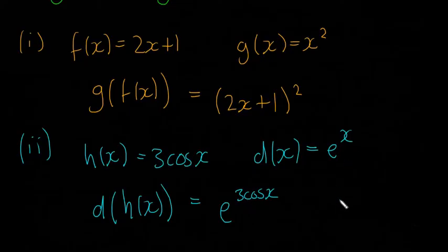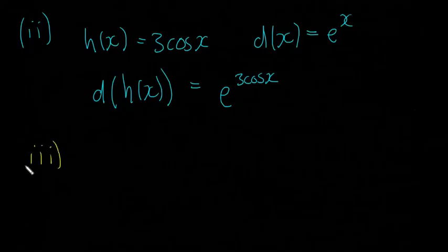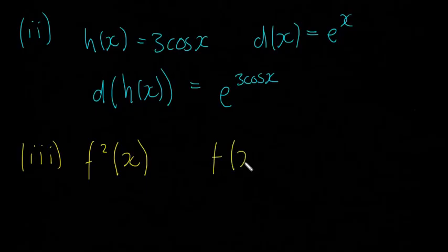You don't have to plot it or graph it or anything like that, all you need to do is just write it out like that. I'll do one last example. Here they're asking us for f squared of x. What that means is it's actually a composite function of itself, so it's f of f of x. They might ask this just to be a little bit tricky.